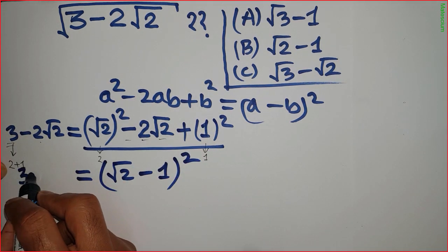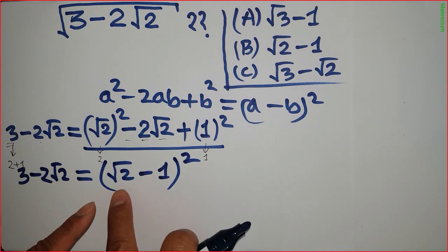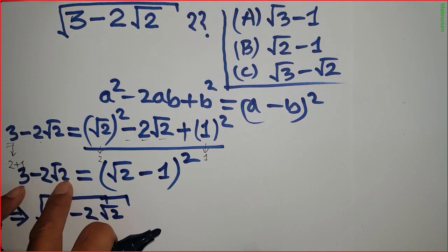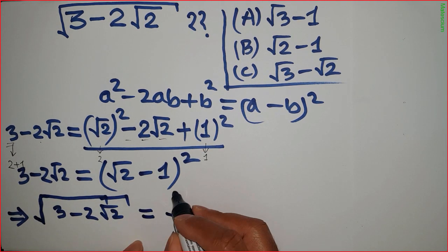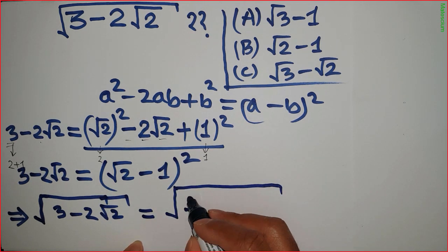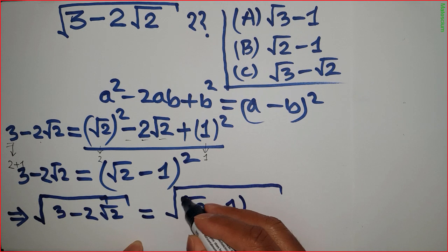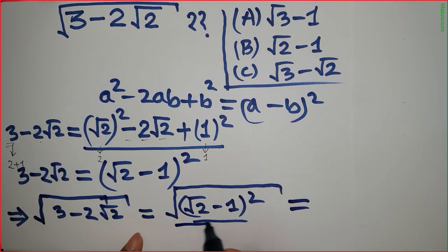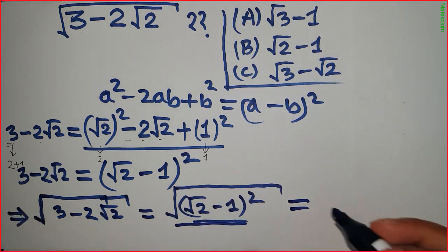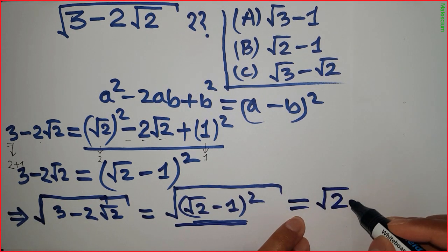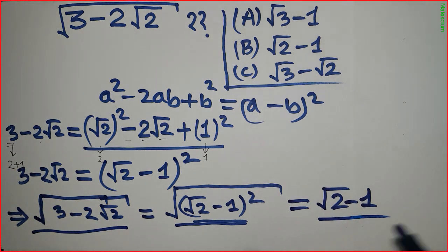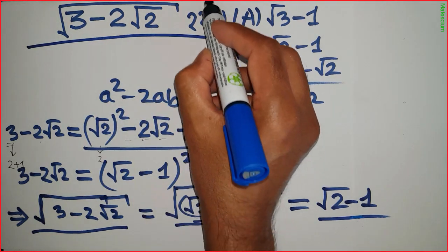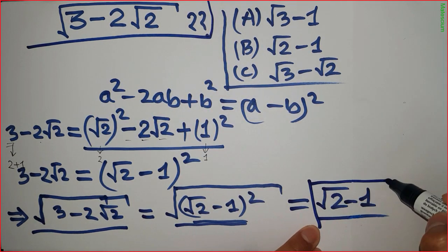The left-hand side, 3 minus 2 square root 2, equals (square root 2 minus 1) whole squared. Now I introduce a square root on the left-hand side, and to keep it equal, I do the same on the right-hand side. The square root and the square cancel each other, leaving square root 2 minus 1.